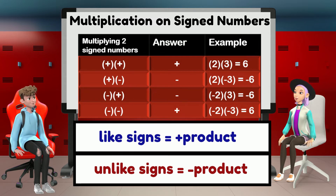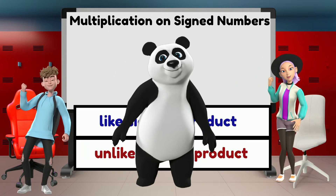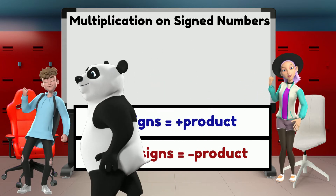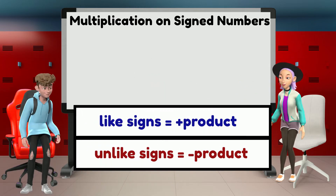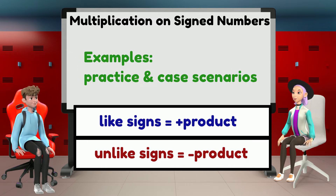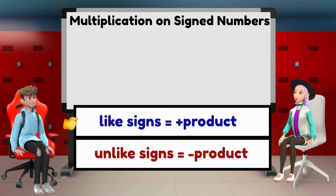I hope that is clear and you don't forget. Again: like signs, positive product. Unlike signs, negative product. That calls for a short break. Now let's have some practice applying each rule using examples, with some explanation on possible case scenario applications. Let's start with multiplying numbers with like signs. There are two cases: positive times positive, and negative times negative. Both give a positive product.